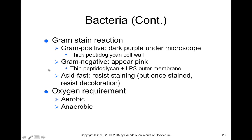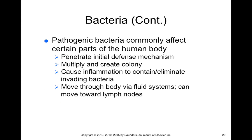Knowing the structure of a bacterial membrane is clinically useful because certain antibiotics are better suited for gram-positive or gram-negative bacteria, so gram staining helps direct drug choice. Bacteria also have different oxygen requirements: some are aerobic, meaning they prefer oxygen; others are anaerobic, persisting in oxygen-poor environments. Pathogenic bacteria commonly penetrate initial defense mechanisms, multiply and create colonies, cause inflammation, and can move throughout the body's fluid systems such as blood and lymph, though fortunately the immune system can clear them.